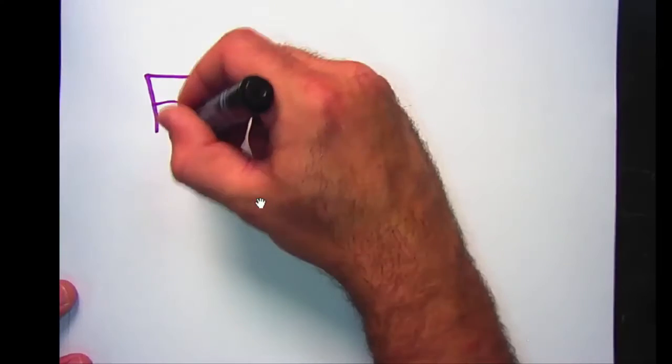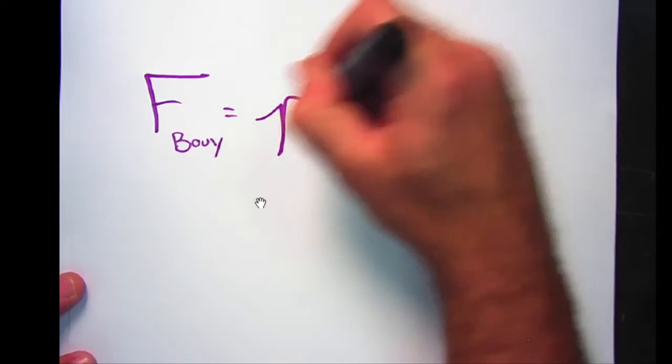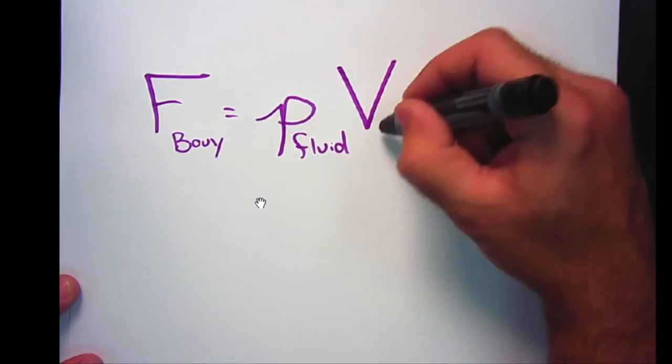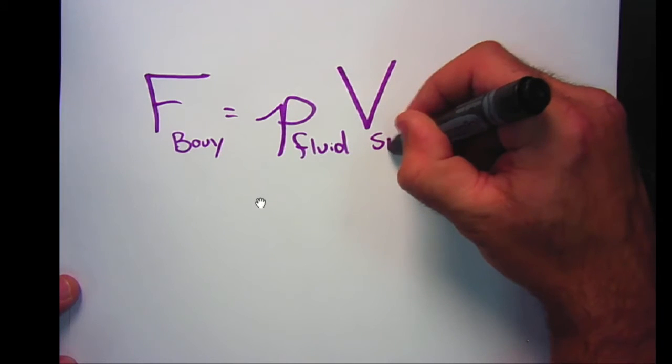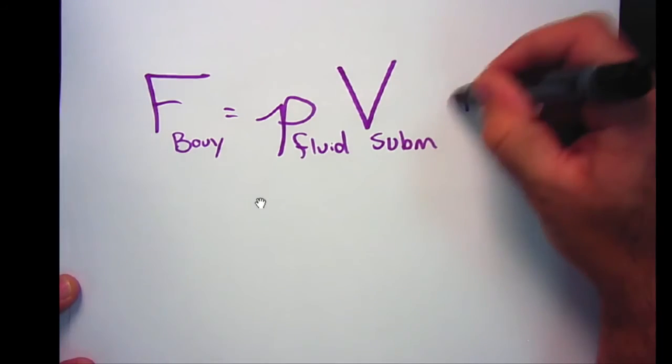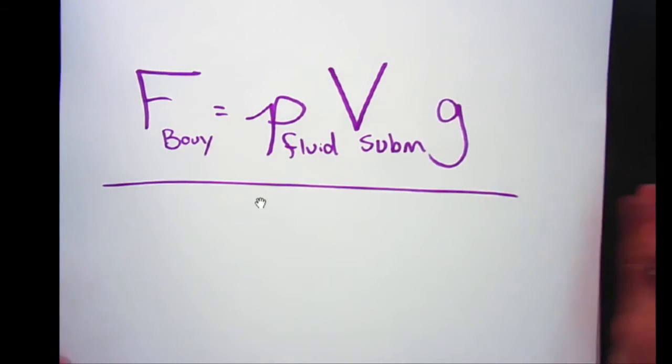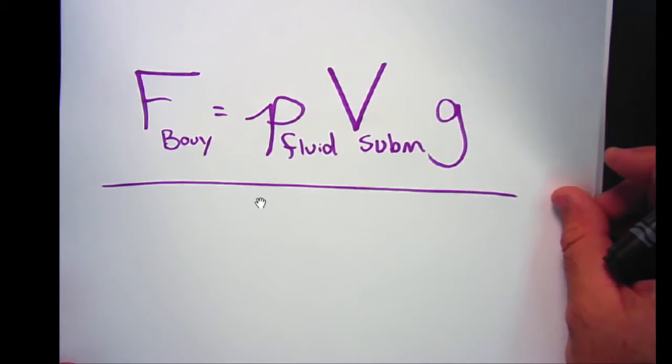Alright, let's recap the main formula that we have so far. The buoyant force is the density of the fluid times the volume of the object that has been submerged times the acceleration due to gravity. Alright, we're going to see that a whole bunch in this chapter.